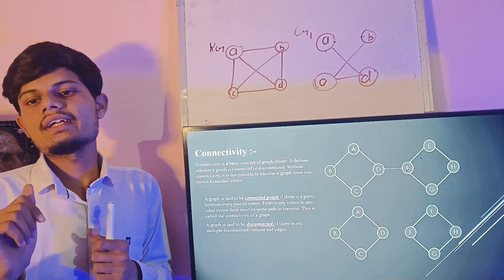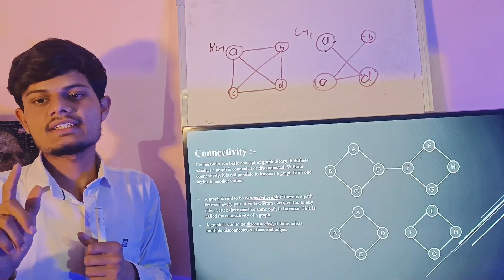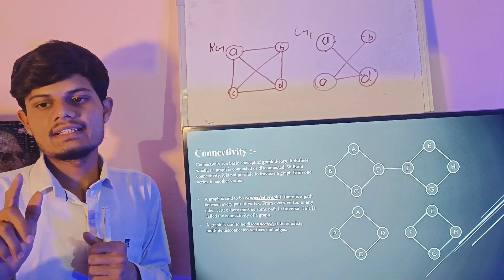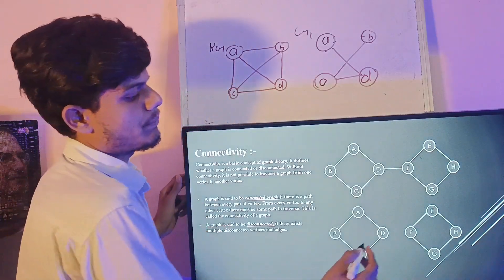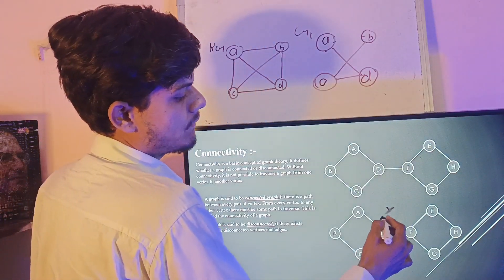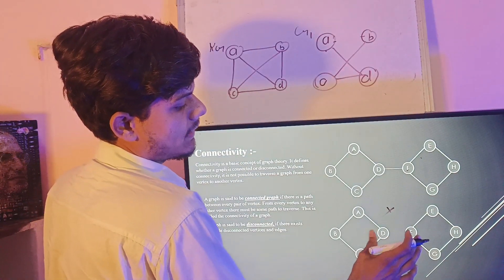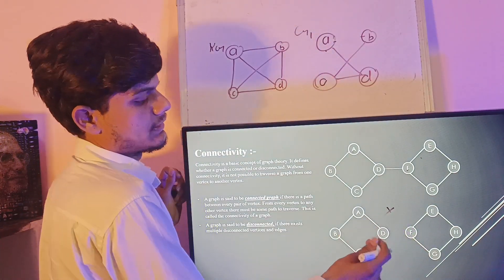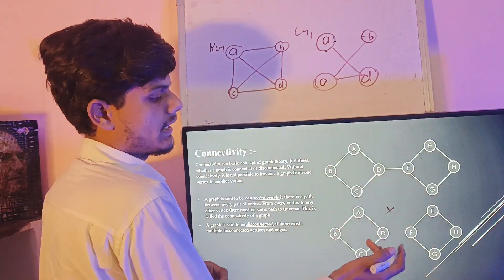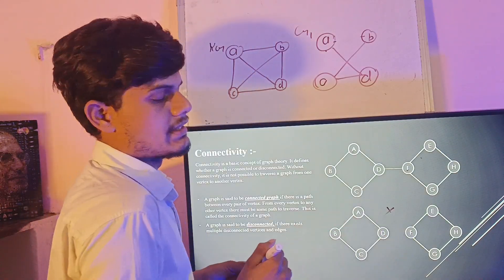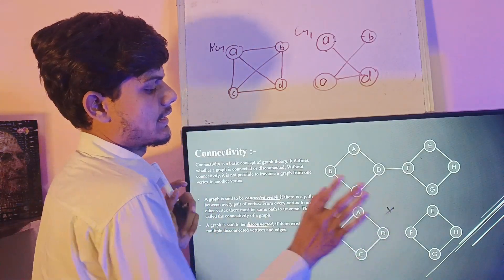A graph is said to be disconnected if there exist multiple disconnected vertices and edges. This is an example of a disconnected graph where these two graphs are disconnected — there are no connecting edges between them. So this graph is disconnected.